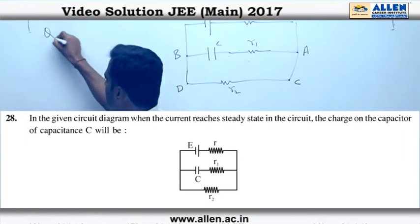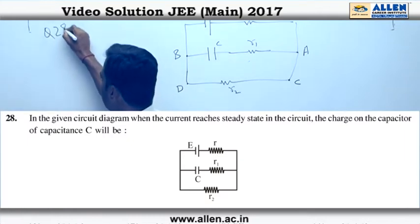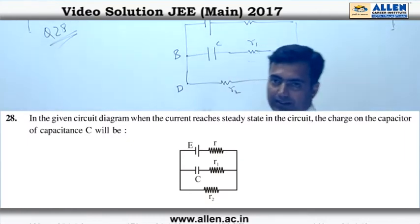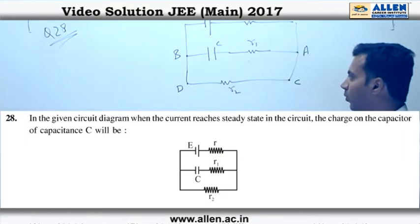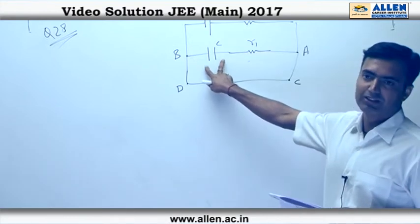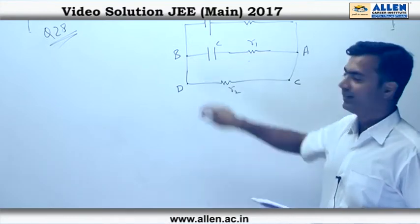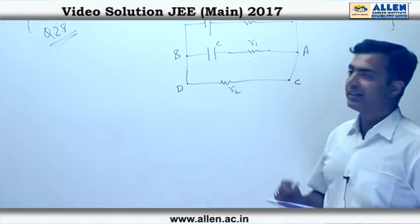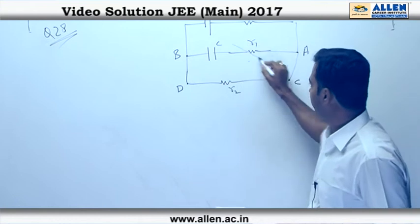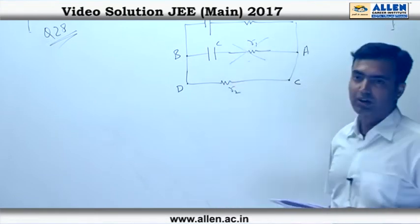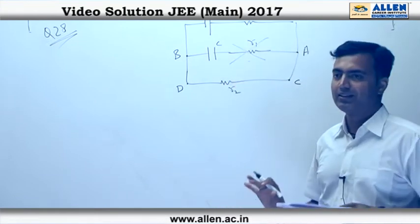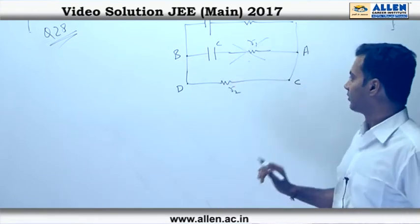Question 28. This is a basic RC circuit whereby we need to find out the steady-state charge on the capacitor C. In steady state, this branch would not carry any current because the capacitor is saturated.